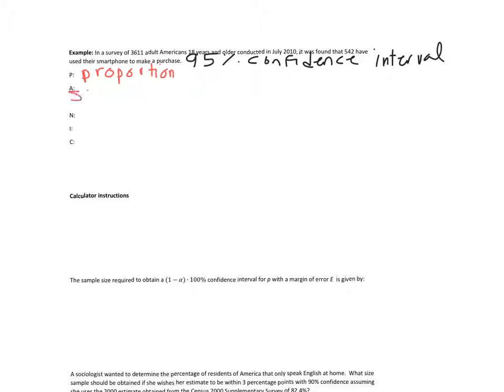Simple random sample. Let's move on to A in our panic. Again, it doesn't say, so we'll just have to assume yes. It's not a deal breaker. Is 3,611 adults less than 5% of the population of all adults? Yes.